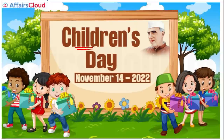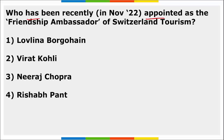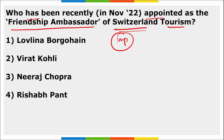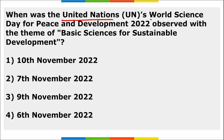Children's Day is observed on the 14th of November in memory of Chacha Nehru. Neeraj Chopra — the golden boy from Haryana who won a gold medal in javelin throw at the Tokyo Olympics — has been appointed as the Friendship Ambassador of Switzerland Tourism. The United Nations World Science Day for Peace and Development is observed on 10th November, with the theme 'Basic Sciences for Sustainable Development.'